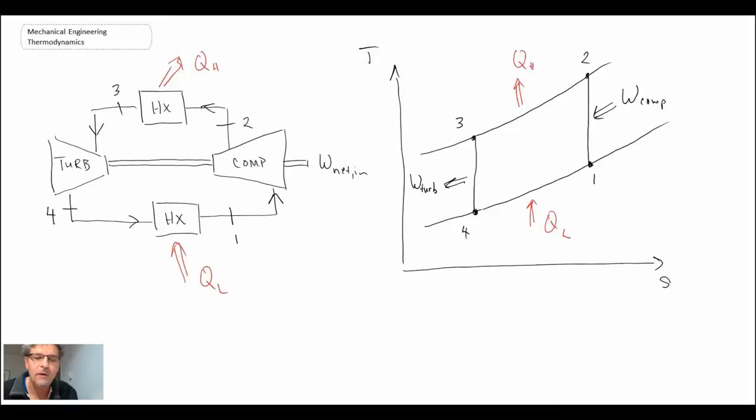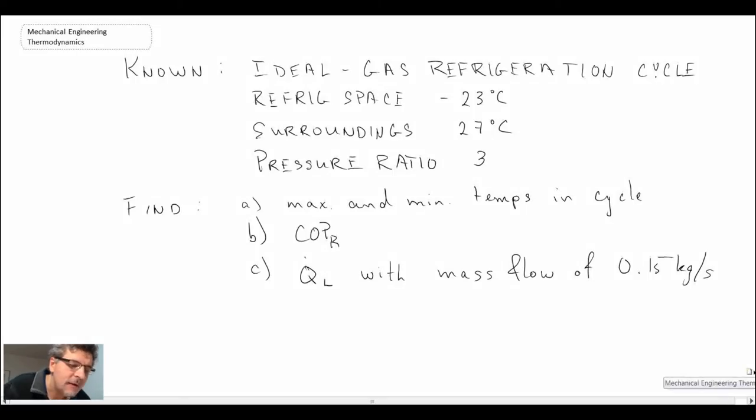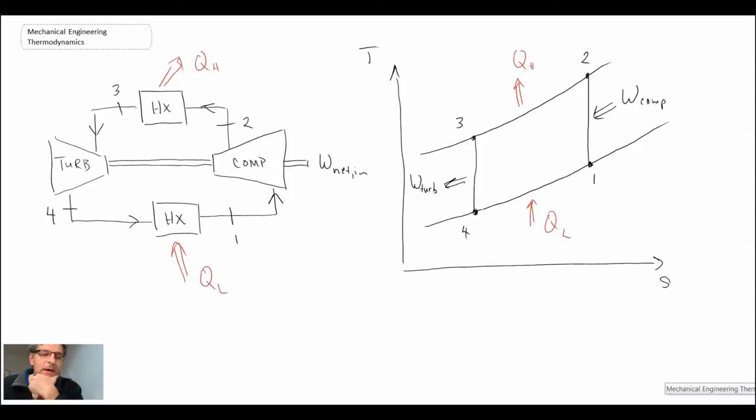There we have our process diagram as well as our schematic. One of the things the question states is the surrounding temperature is 27 degrees Celsius. If the surrounding is at 27 degrees Celsius, that tells us the temperature at the end of our heat rejection process cannot be lower than the surrounding, so it cannot be less than 27 degrees Celsius. That is basically specifying temperature 3 in our cycle.